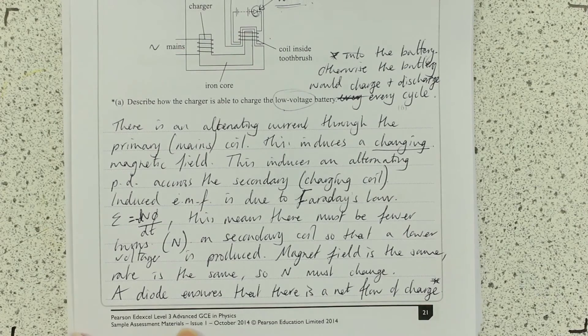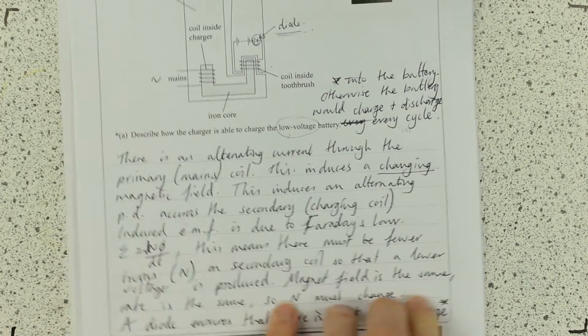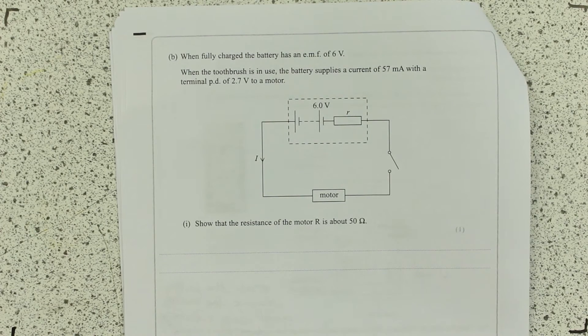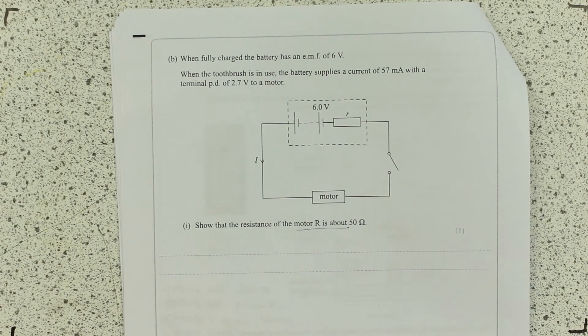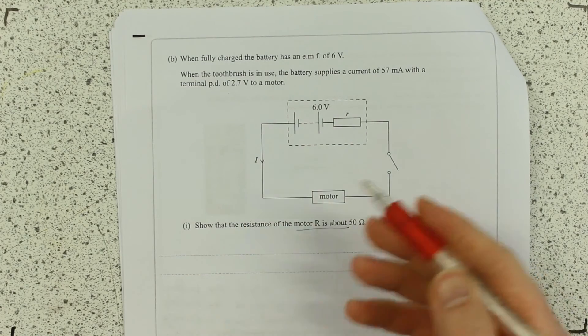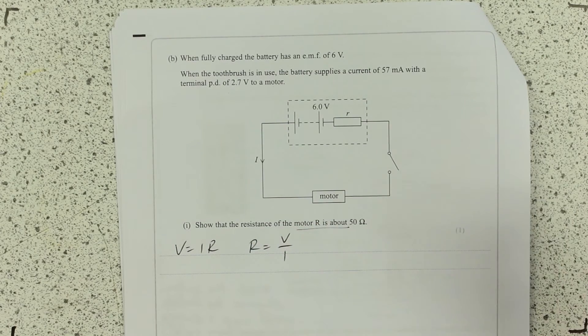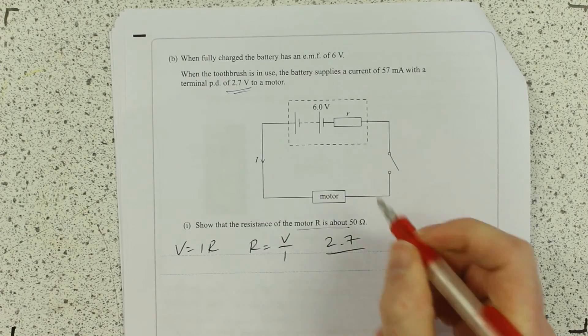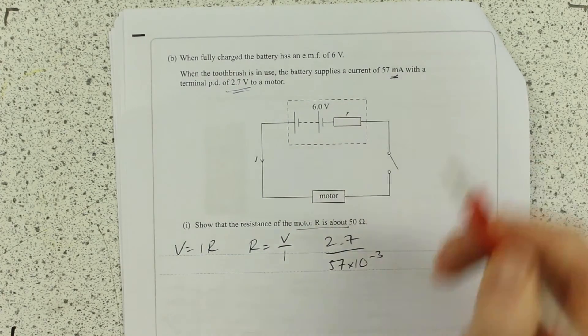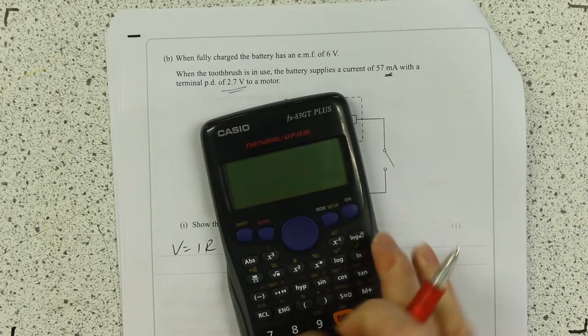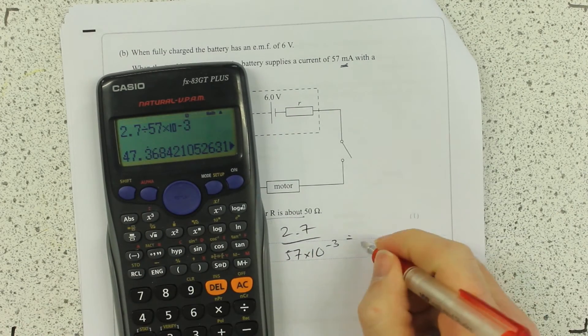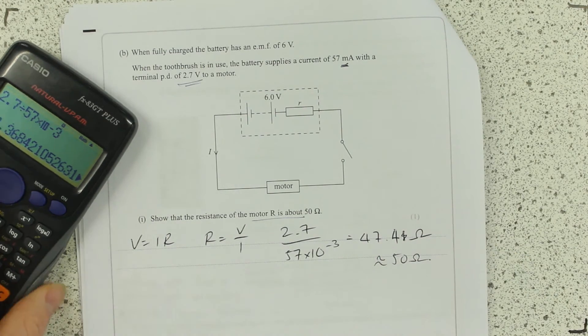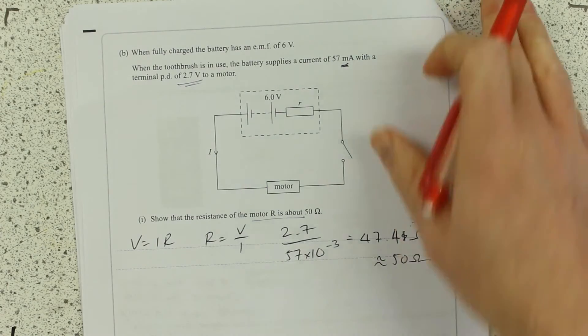Okay, I hope that helps with that one. Pretty standard question, just with a few little clues as to where the extra marks are. Okay, so now we're talking a bit more detail about the charging circuit. This one simply shows the resistance of the motor. R is about 50 ohms. Here, you're just basically using Ohm's Law. So, R is V over I. Which V and which I are you going to use? It's going to be the terminal PD. Just ensure that you use your prefixes there. That's where the time to 10 to the minus 3 is.